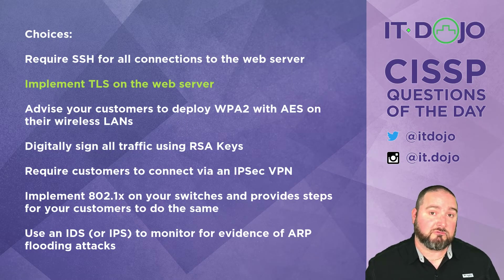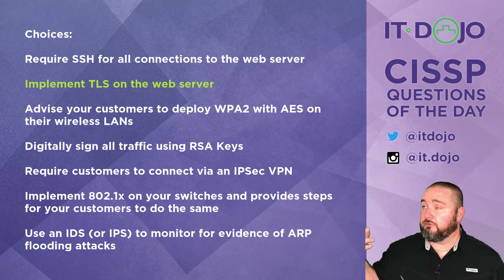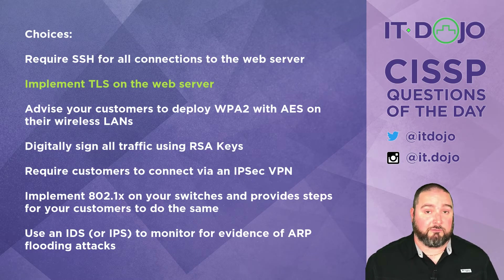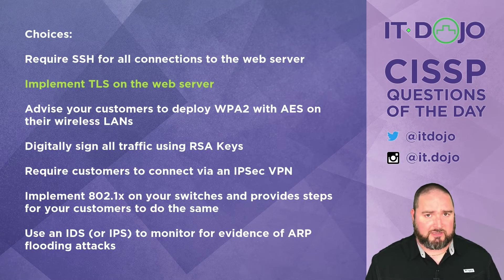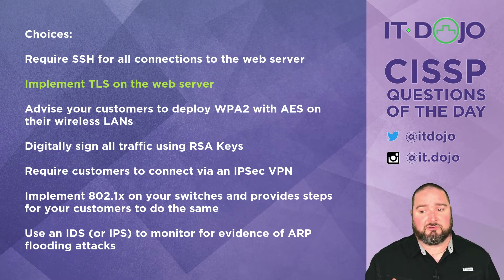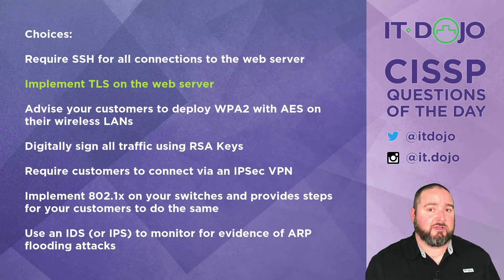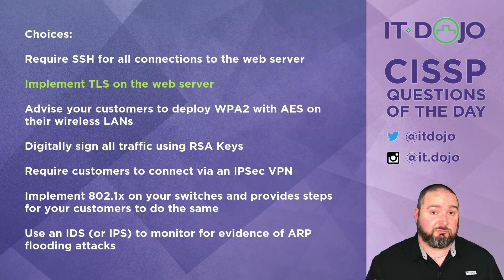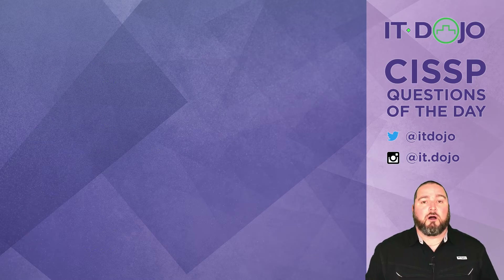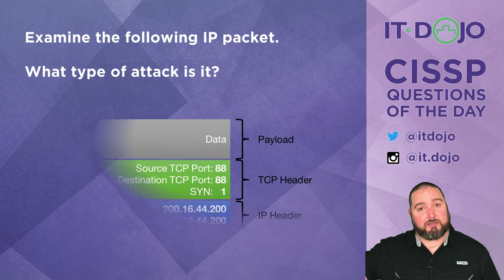The very last choice — just there to confuse you — is to use an IDS or IPS to look for evidence of ARP flooding attacks on the network. What an ARP flooding attack has to do with people viewing your sensitive information, there's really no rhyme or reason to that, particularly across a wireless LAN. This is just there to distract you and has no bearing on the right answer. You need end-to-end encryption, and the best way to do that given the choices is to implement TLS on your web server.